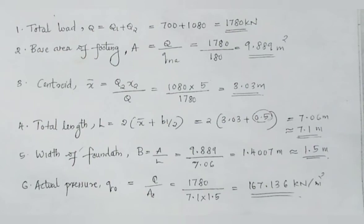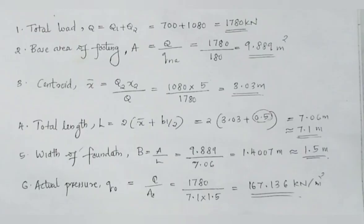The centroid x-bar is equal to Q2 times x2 divided by Q, giving x-bar equal to approximately 3.03 m. The total length is 2 times x-bar plus b1 divided by 2. The width b is equal to A divided by L. The actual soil pressure is Q divided by A0, calculated as 167.136 kN/m², which is less than the allowable 180 kN/m².